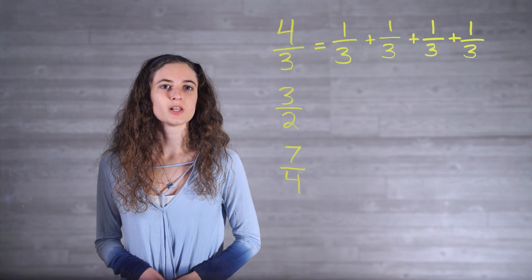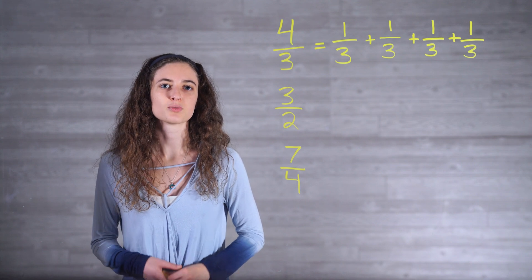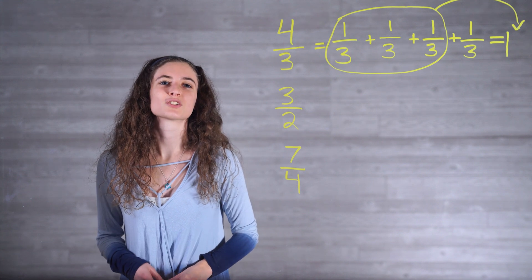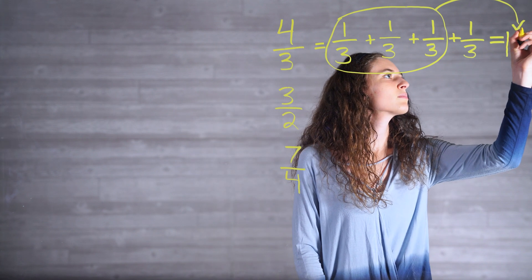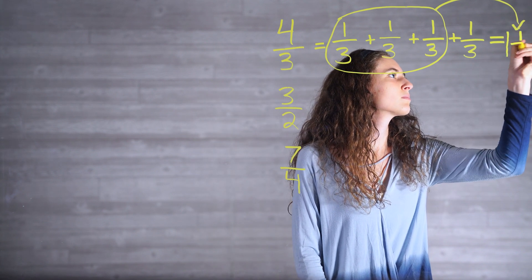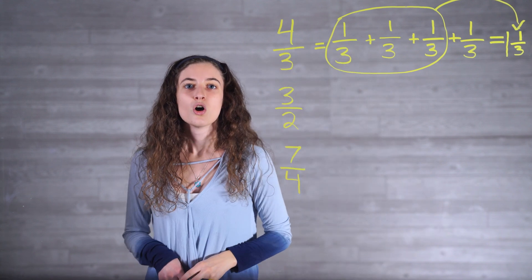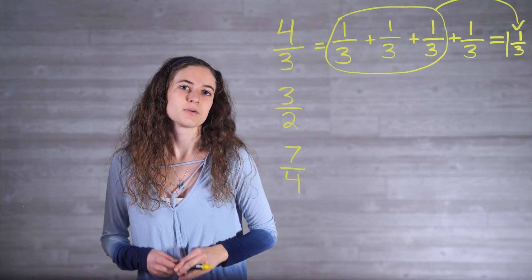Let's try a few more examples — writing the following improper fractions as mixed numbers. 4/3 can be visualized as 1/3 + 1/3 + 1/3 + 1/3. We know that 3/3 is equal to 1, so let's group 3 of these thirds together. We are now left with 1 and 1/3 as our mixed number.